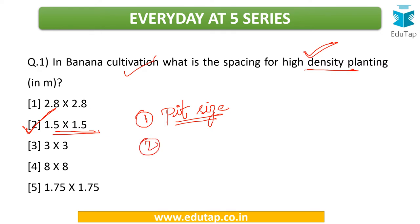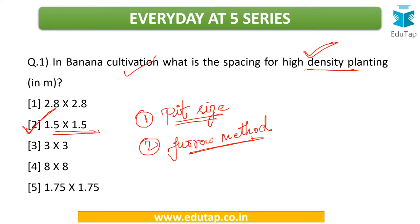There are usually two methods used — the planting methods in case of banana. One is the trench method and the second is the furrow method. You need to tell me in which states in India the furrow method is commonly used in case of banana cultivation. So you have got two questions to answer: one is the pit size, and the second is in which states in India you use the furrow method for banana crops.